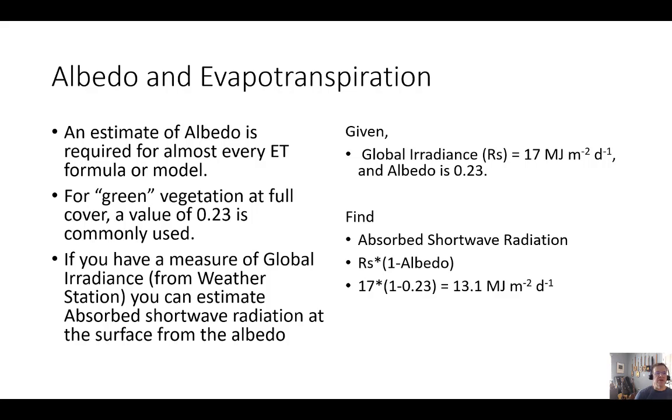In a quick summary, albedo and evapotranspiration: an estimate of albedo is required for almost every ET formula or model. For green vegetation at full cover, we often use 0.23. If you have a measure of global irradiance from a weather station, you can calculate the amount of absorbed shortwave radiation just by taking the global irradiation times one minus the albedo. In this case, 17 megajoules per meter squared per day times one minus 0.23 would give us 13.1 megajoules of energy available to evaporate water or do some kind of other work in the energy balance. I think that's a good stopping point and we'll continue on in the next lecture.